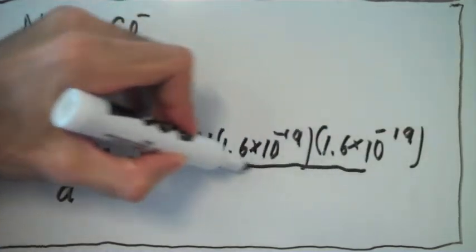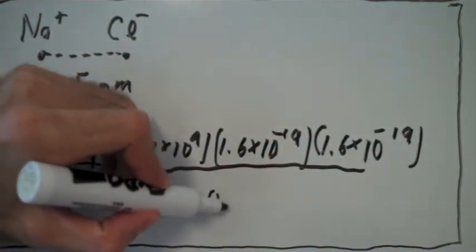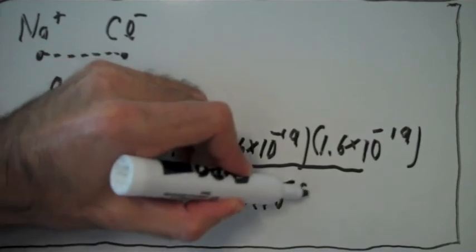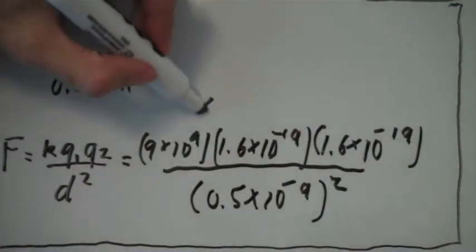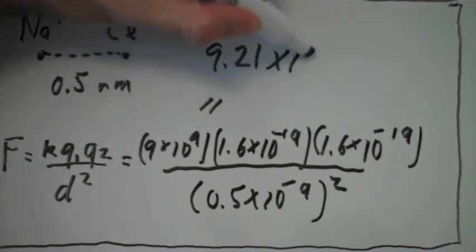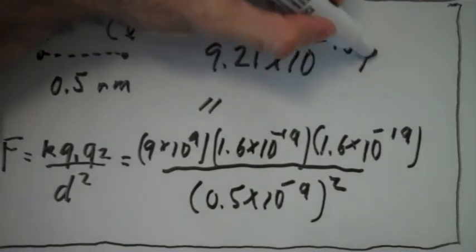And the separation distance between them is 0.5 times 10 to the minus 9 meters. So we put that squared. So if we plug in these numbers into a calculator, we find that total force between the atoms is 9.21 times 10 to the minus 10 newtons.